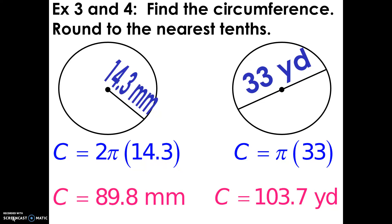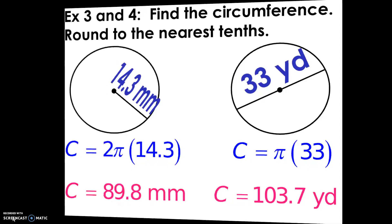The first one, the circumference is about 89.9 millimeters. The second one has a circumference of 103.7 yards. Alright, so that's circumference.